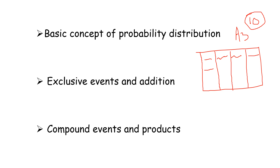In Unit 2, one important thing is the mind map. First, basic concept of probability distribution. Probability is the main formula: the number of cases in which the event occurs divided by total number of cases. The sum of the two probabilities is p and q, where p plus q is always equal to 1.